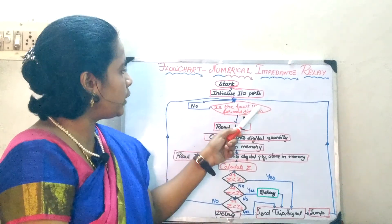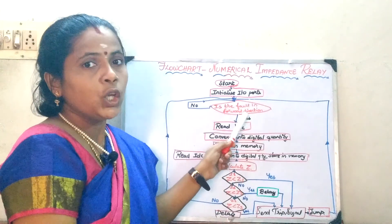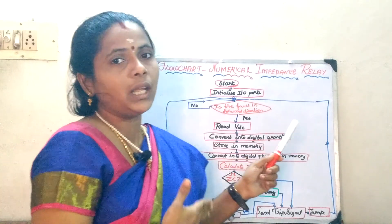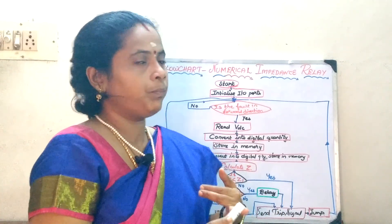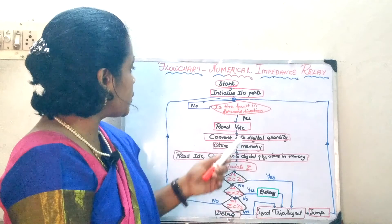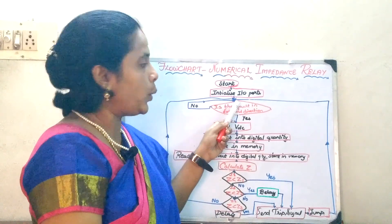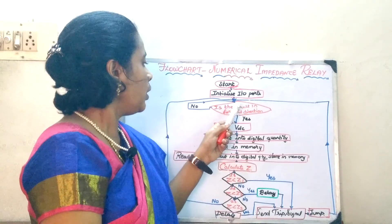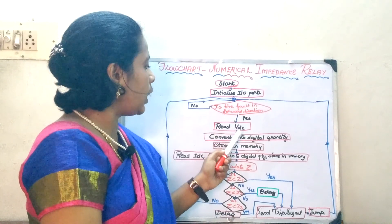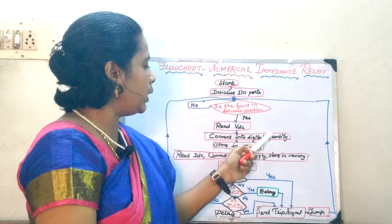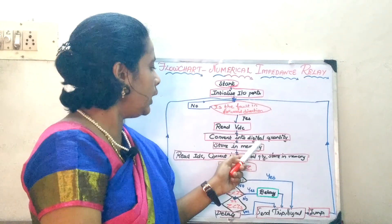If the fault is going to be detected in the forward direction, then you are supposed to compute your inputs, that is your VDC and your IDC. If not, you have to wait for the fault occurring in the forward direction. Here you are going to read the VDC and then convert it into the digital quantity.